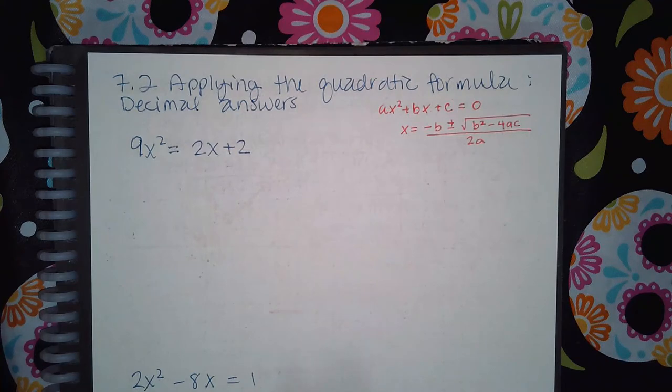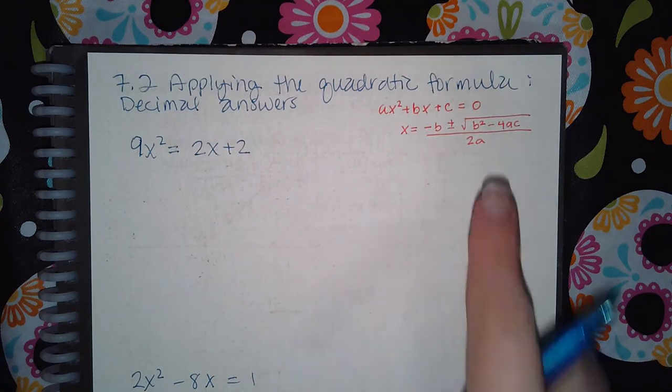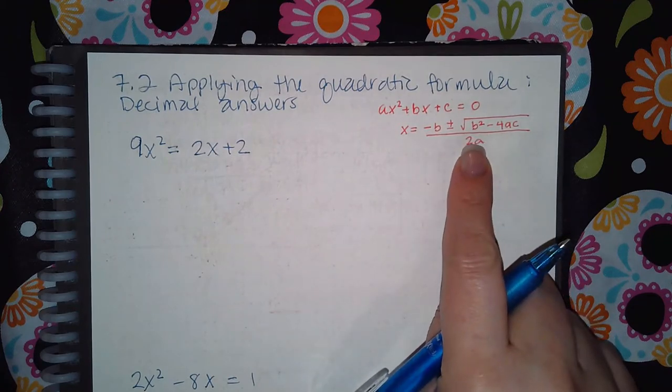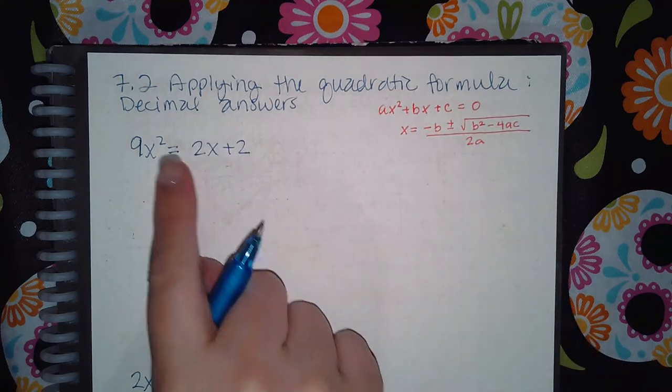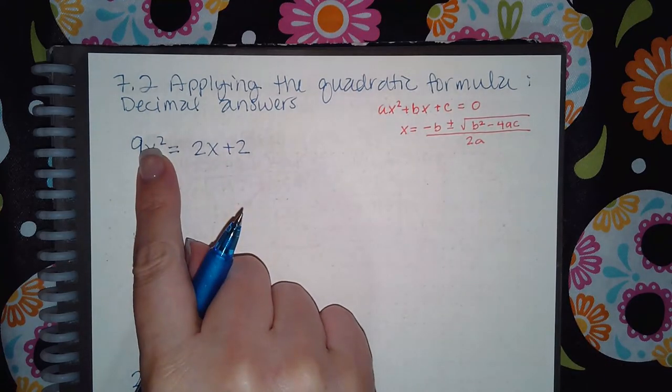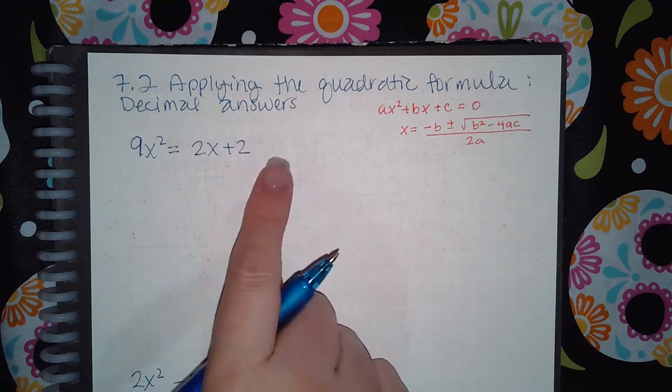Now I usually want to keep the x squared term positive because it is much easier to simplify a fraction that has a positive denominator. So I want to keep this 9x² where it is, therefore I'm going to move these two terms over.